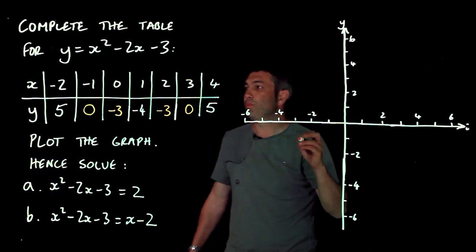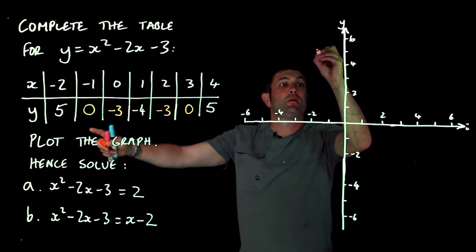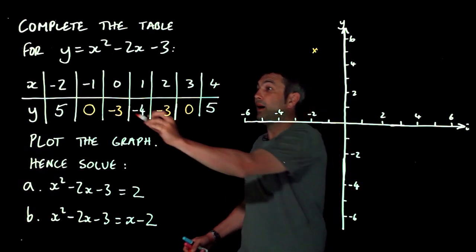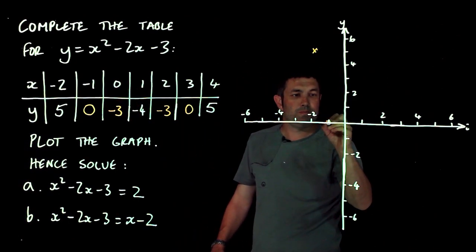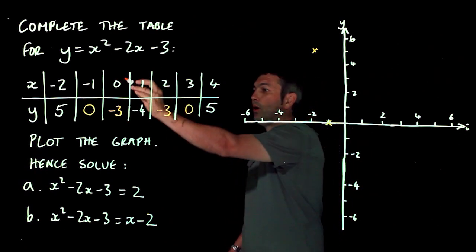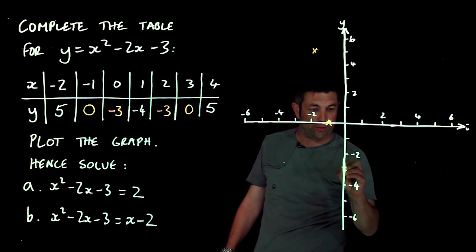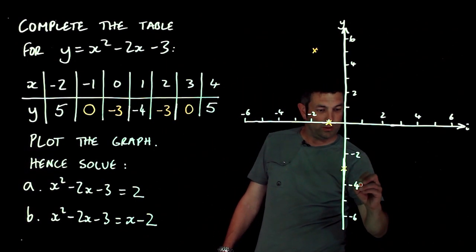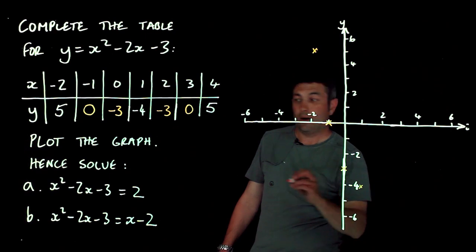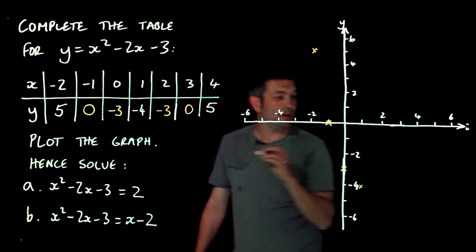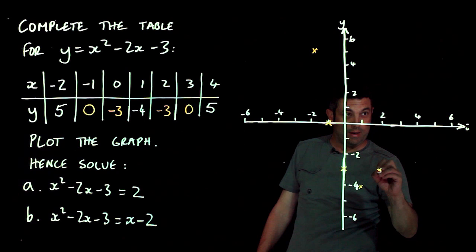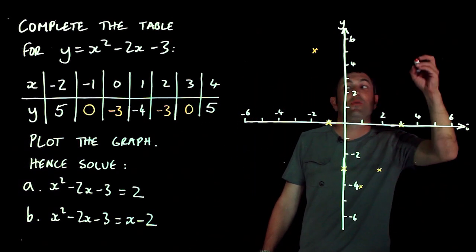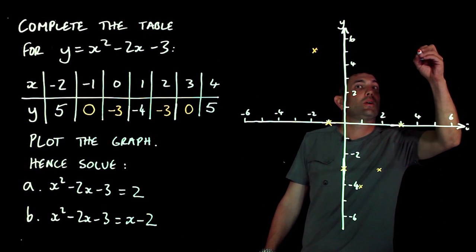Now let's plot these points. We've got negative 2, 5. Remember to do it with a cross. And we've got negative 1, 0. And we've got 0, negative 3, which is about there. And we've got 1, negative 4, which is there. And we've got 2, negative 3, which is there. And we've got 3, 0 there. And 4, 5, if my memory serves me correctly. There we go.